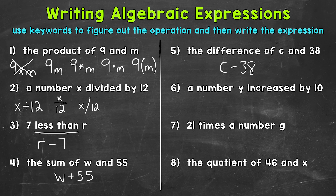Number 6: a number Y increased by 10. 'Increased' is our keyword, which means we are going to use addition. So Y plus 10. On to number 7: 21 times a number G — so multiplication. We use a number next to our variable, since that represents multiplication. So 21G represents 21 times G.